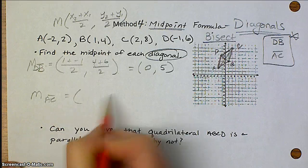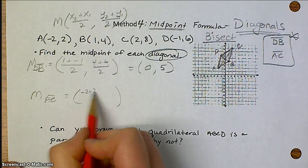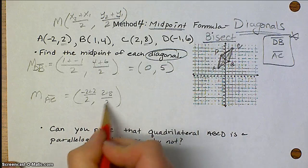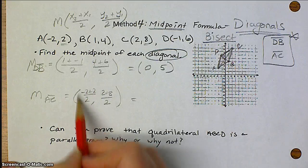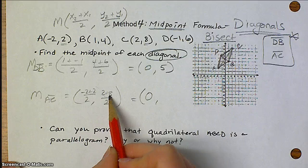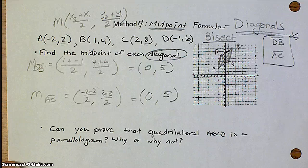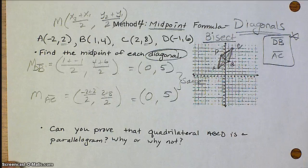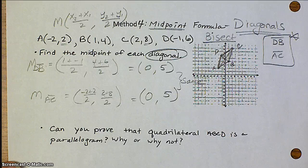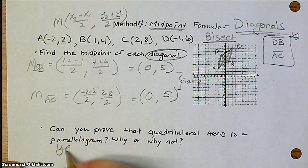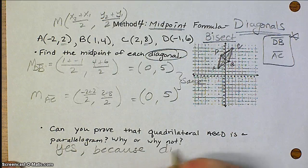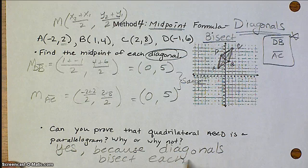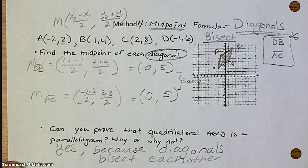Now we're also going to find the midpoint of AC. So AC, negative 2 plus 2, cut it in half. And then 2 and 8, cut that in half. So again, negative 2 plus 2 gives you 0 again. 2 plus 8 is 10, 10 divided by 2 is also 5. Look at that. The midpoints are the same. Well, if the midpoints are the same, that means that both of them are meeting at the same midpoint, which means they bisect one another. So is this a parallelogram? Yes. Because diagonals bisect each other. And you could also add, since they have the same midpoint.